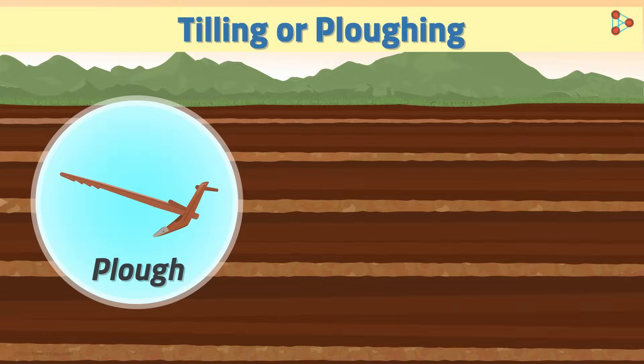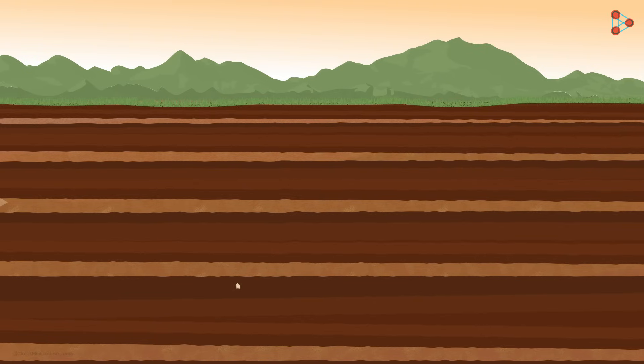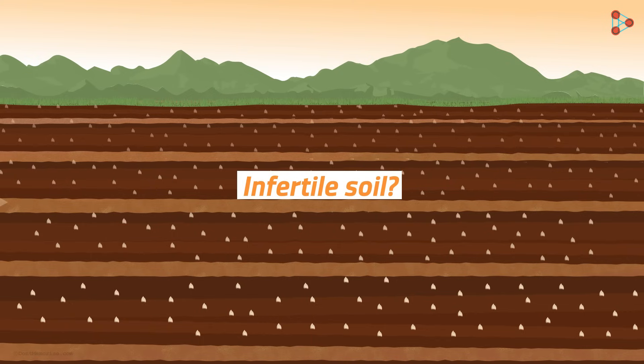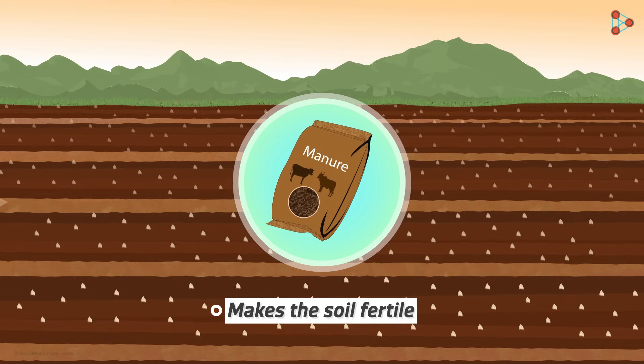Even after ploughing, huge chunks of soil could be left behind. These chunks need to be broken down into smaller fragments. Soil also needs to be leveled so that the land is even and sowing of seeds can take place. What if the soil has not regained its fertility? Manure can be added to make the soil fertile.